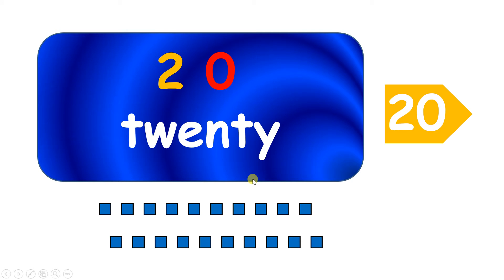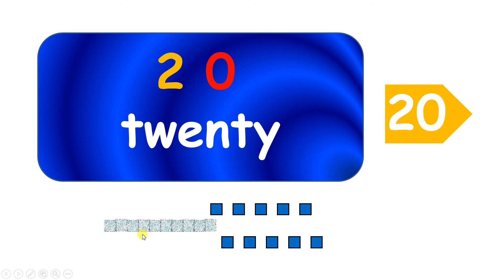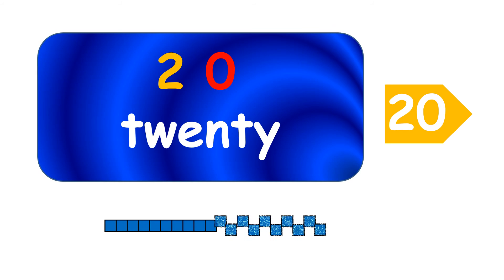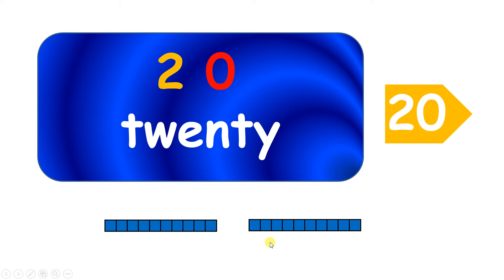Now we have the number twenty, and we write the number twenty in numerals as two, zero. Why do we write the number twenty as two, zero? Well, remember, we like to make a line of ten, or a group of ten. The number twenty is a special number because we can make one line of ten, but now look — we have ten left over, so we can make another line of ten. So now we've made two lines of ten and we have nothing left over — we don't have any units. So we write the number twenty with a two to tell us that we have two tens, and a zero to show that when we've made our two lines of ten, we don't have anything left over — we don't have any units.